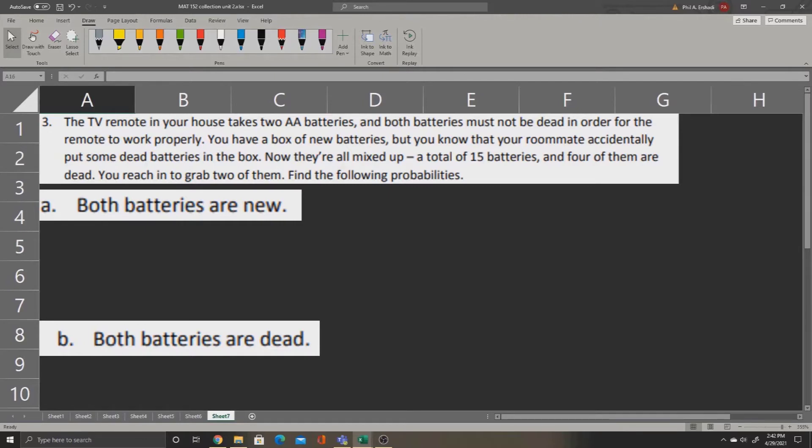We are asked to find the probability that both batteries are new. So we begin with four dead batteries and 15 total. It would help if we knew how many batteries were live. So to find the live batteries, we can just take 15 and subtract 4. 15 minus 4 is 11, telling us 11 of the batteries are live.